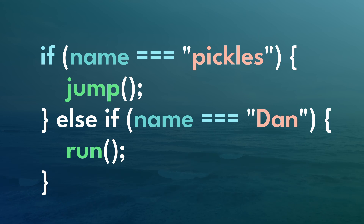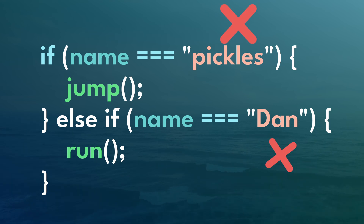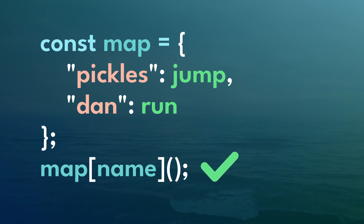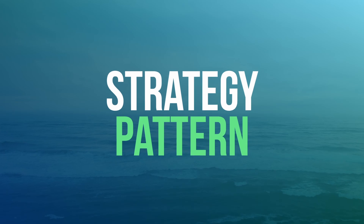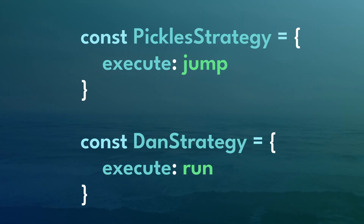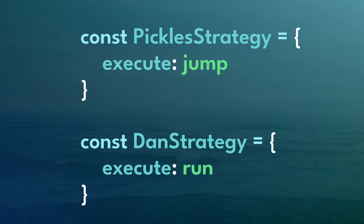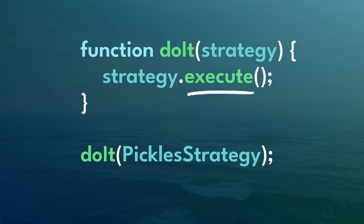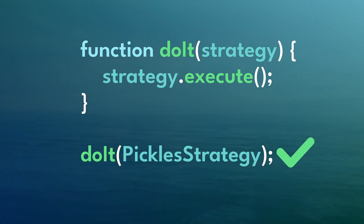If the conditions in your if-else statements are checking for string values, you can use a map or an object instead, where you can just reference a key in a map and it'll return the value or run a function. Alternatively, you can use a strategy pattern. A strategy pattern involves creating a set of algorithms and selecting the one you need. Each strategy should have a common shape or interface — in this case, each strategy has an execute function. So when a function uses a strategy, it'll call that execute function, and depending on the strategy you select, it'll change the functionality.